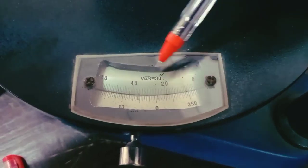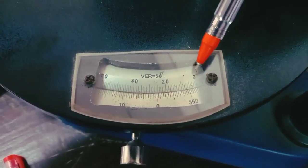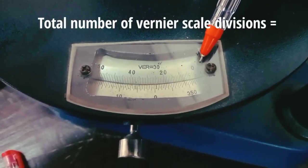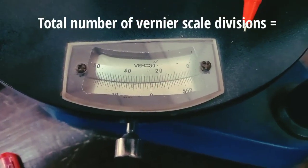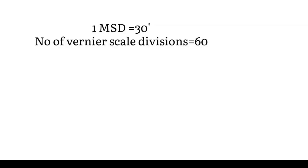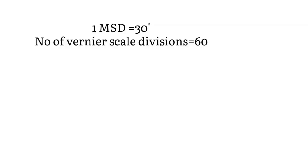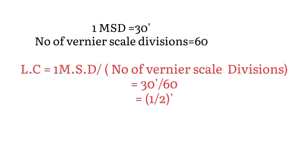The top scale is the vernier scale. The total number of divisions in the vernier scale is 60. Since 1 main scale division equals 30 minutes and the number of vernier scale divisions is 60, the least count equals 1 main scale division divided by the number of vernier scale divisions, which is 30 minutes divided by 60, equal to half a minute.